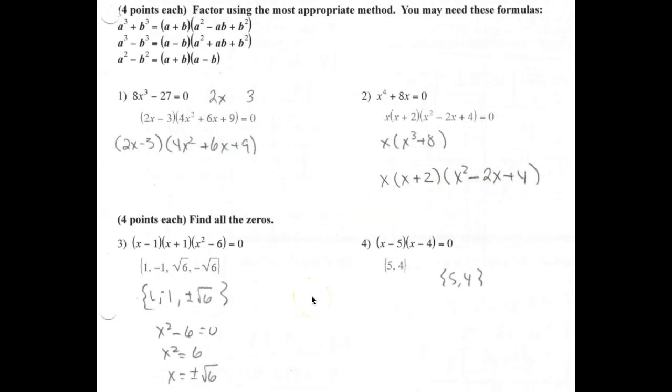Okay, on the next two problems, you were asked to find all the zeros, but you were given the factors. So each one of these factors, you will set equal to 0 and solve for x to find the zeros.